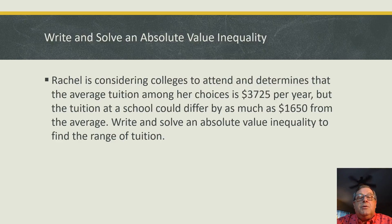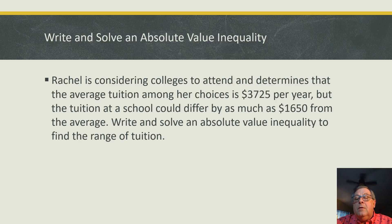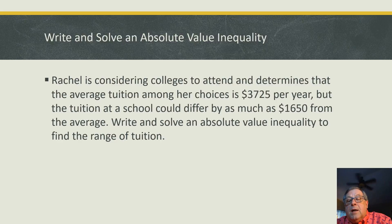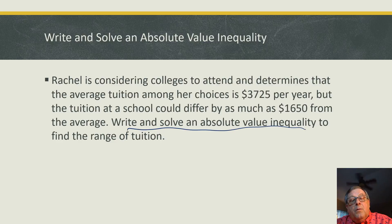Rachel is considering colleges to attend and determines that the average tuition of her choices is three thousand seven hundred and twenty-five dollars per year, but the tuition at a school could differ by as much as one thousand six hundred and fifty dollars from the average. We need to write and solve an absolute value inequality to find the range of the tuition.